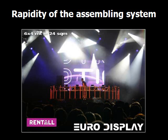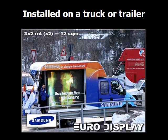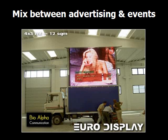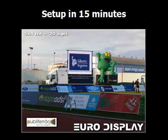The fourth application is mobile video. In this case, LED screens are installed on a truck or trailer that can travel around the country to attend events or be parked as a temporary advertising installation. Due to their flexibility, mobile video trucks and trailers are a mix between advertising and events applications. The most advanced solution consists of a completely automated truck equipped with a stabilizer, a lifting system and a rotating system to orient the screen towards the audience. The LED screen can be set up by one person in just 15 minutes after its arrival on site.